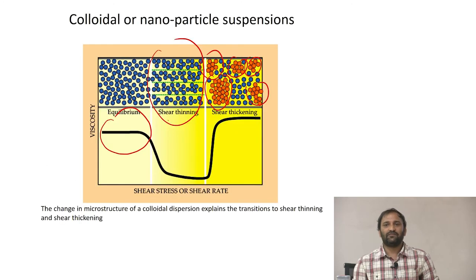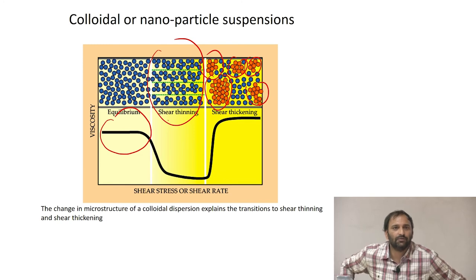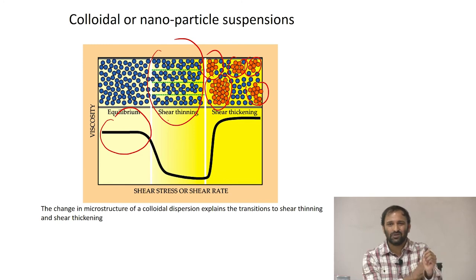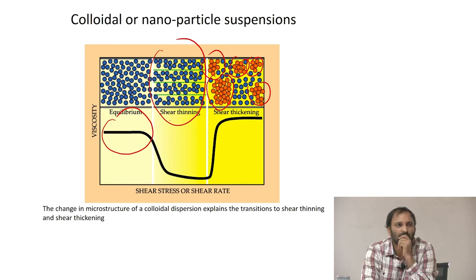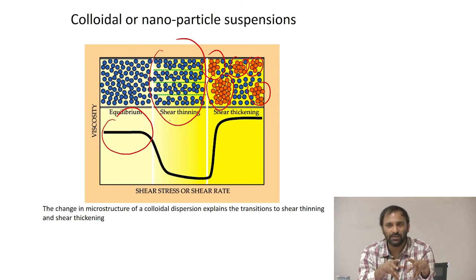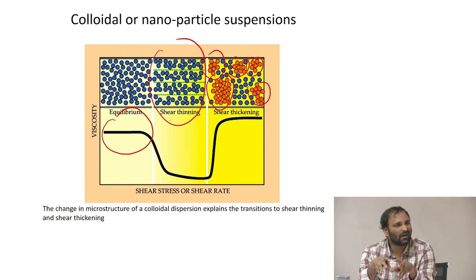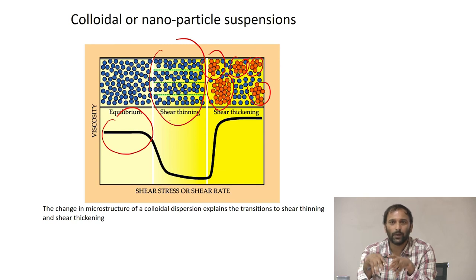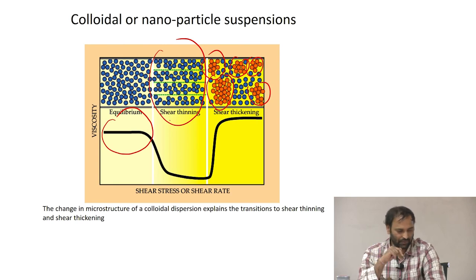To summarize what has been covered: we defined viscosity, discussed different classes of fluids, and examined one example — colloidal dispersions — where Newtonian, shear thinning, and shear thickening behavior can all be observed in the same fluid.